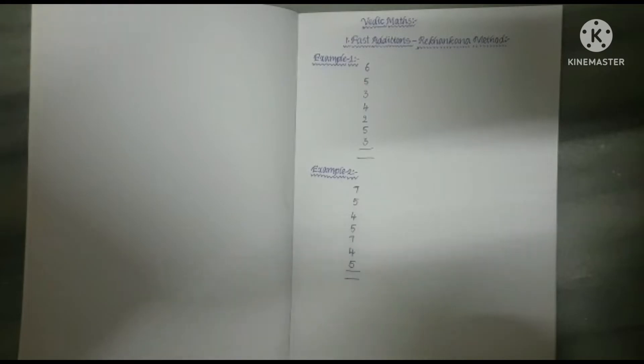In this method of addition, we don't count and remember the entire total of the digits to be added. In Rehkankana Method, we add the numbers and whenever we reach 10 or more than 10, we drop 10 there in the form of a line and carry forward the balance left with us. At the ending digit, we put only one single digit in the unit digit of the answer. These are the three points to remember.